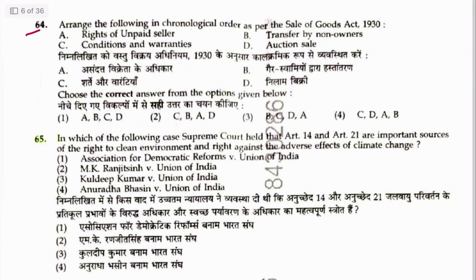Question 64: Arrange the following in chronological order as per the Sale of Goods Act. Right of unpaid seller — Section 46. Conditions and warranties — Section 12. Transfer by non-owner — Section 27. Auction — Section 64. Sequence is C, B, A, D. Answer is 2.